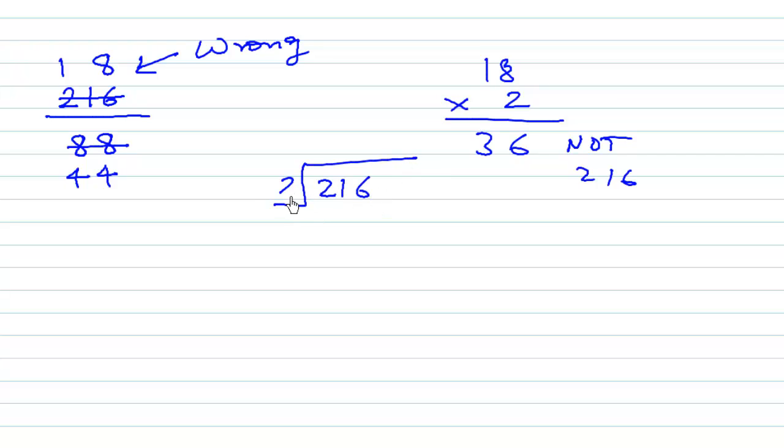The mistake: when dividing 216 by 2, we write 2 times 1 is 2, write 0, then bring down one digit at a time, not 16 together. We should write 2 times 0 is 0, 1 minus 0 is 1, bring down 6, then 2 times 8 is 16. It's wrong to write 18 directly - this is a common mistake. We should have written 108.